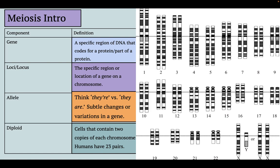Here we can see all 23 pairs of our chromosomes. Chromosomes 1 through 22 are non-sex-based chromosomes, and then you can either be XY or XX based on your biological sex. There are still variations within these chromosomal combinations that can code for more than just XY or XX.